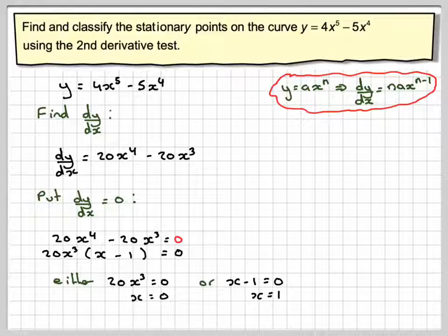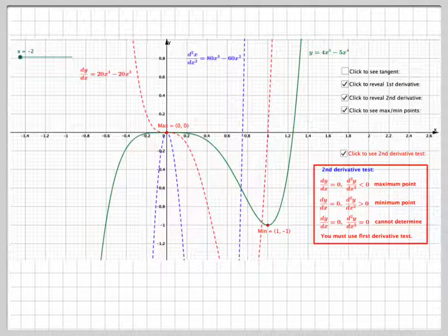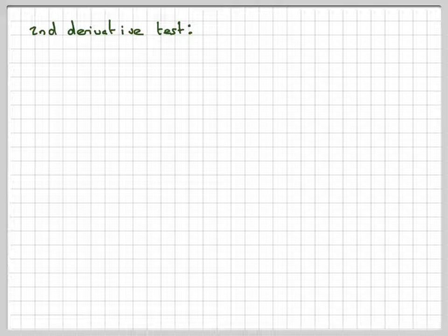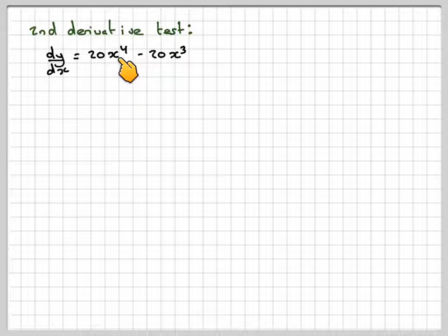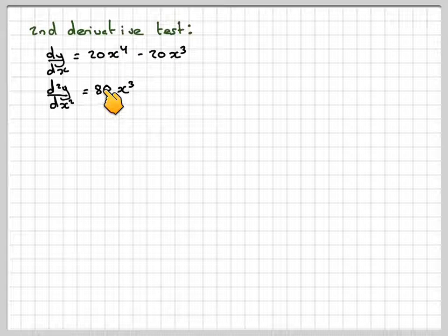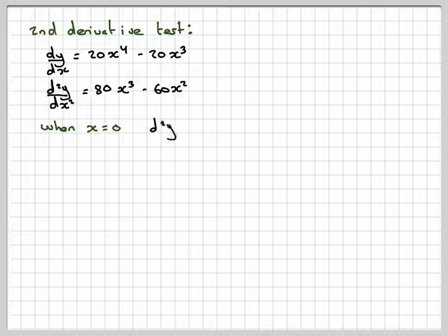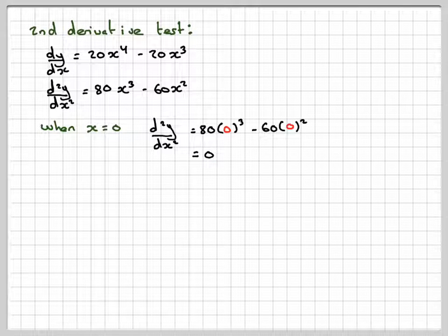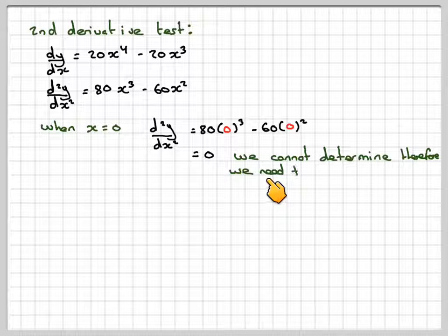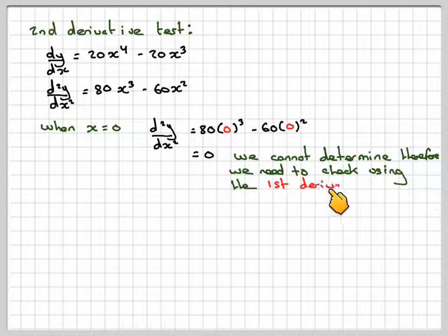Looking at this algebraically: dy/dx = 20x⁴ - 20x³. Differentiating again to find the second derivative: 4 × 20 = 80x³, and reducing the power by 1 on the next term gives 60x². When x = 0, substituting into the second derivative gives 0. Therefore, we cannot determine the nature of this point and need to use the first derivative test.